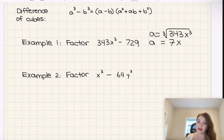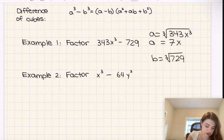Then for the second part we have 729, so b is going to be equal to the cube root of 729, which is 9. Yes, b is equal to 9.